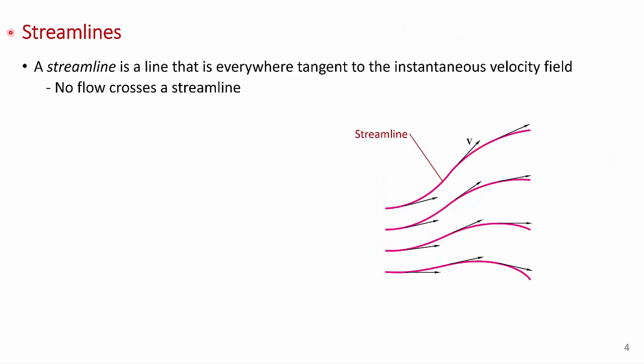So let's start with streamlines. This is the definition. A streamline is a line that is everywhere tangent to the instantaneous velocity field. And over here, I've drawn a simple two-dimensional flow. The black lines are the velocity vectors, the local velocity vectors. And if you draw a line, these red lines that are everywhere tangent to those local velocity vectors, you get a set of streamlines. And here's the significant point. Because there's no component of V, no component of the local velocity vector that's normal to the streamline, no flow crosses a streamline.